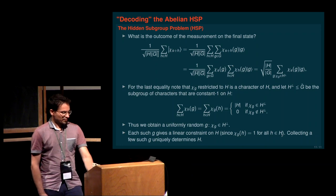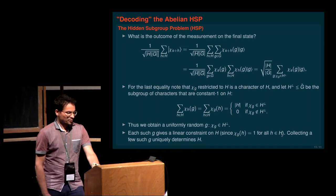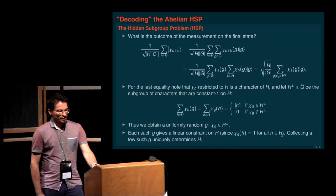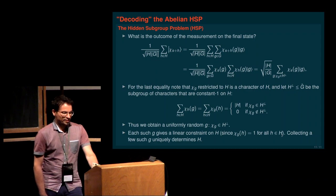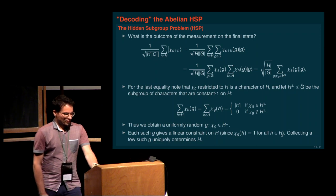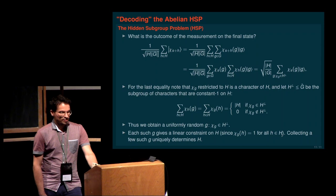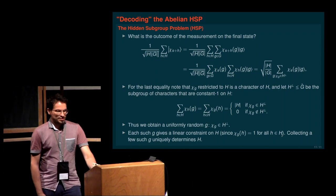This finishes the abelian hidden subgroup problem. In the exercise sheet you will see examples showing how period finding, discrete logarithm, and generalized discrete logarithm problems are all instances of this abstract concept, and therefore we have efficient quantum algorithms for them - with implications for breaking Shor and discrete logarithm based cryptography. The exercise sheet has hints on the final page if you get stuck. Thank you very much.